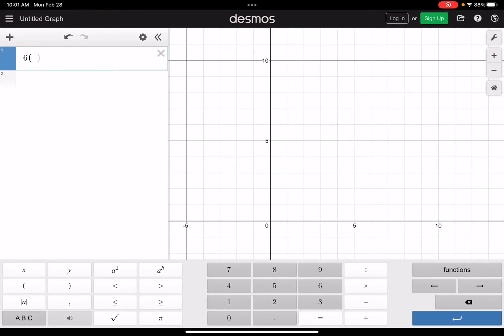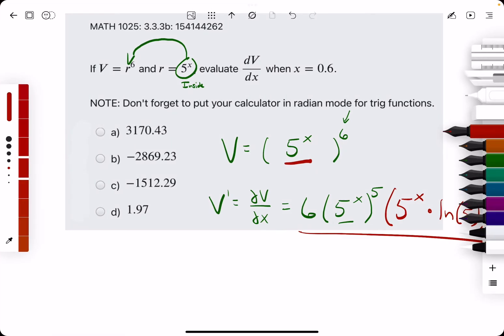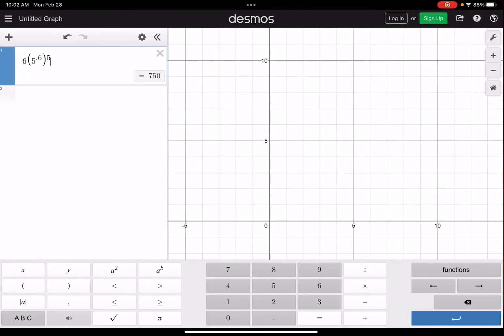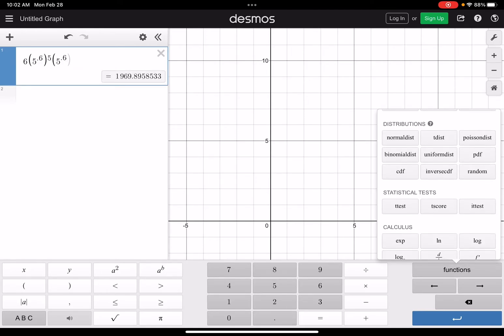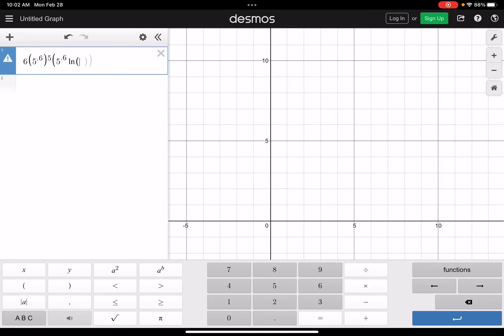6 times 5 to the 0.6, raised to the fifth. Did I get that right? And then all multiplied by 5 to the 0.6 times the natural log of 5.